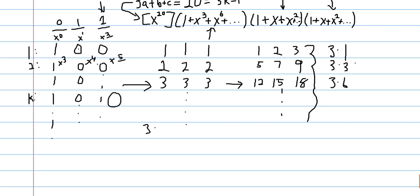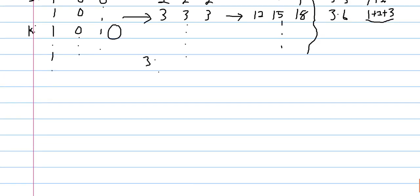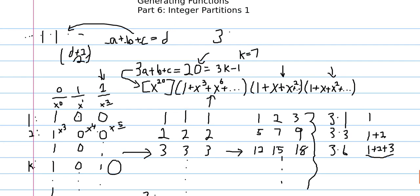Now we also notice our pattern here — 3 times triangular numbers. We have 1, 1 plus 2, 1 plus 2 plus 3. And these last numbers are whatever k is, because it's the row number on the k-th row. So it's obvious that we'll have whatever the row number is as what we're multiplying. So basically our answer here is 3 times (1 plus 2 plus ... plus 7).